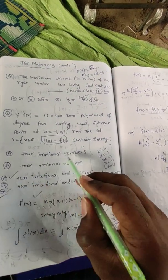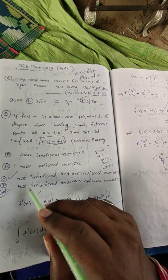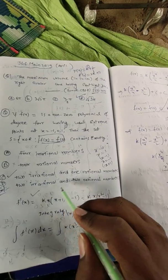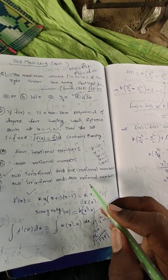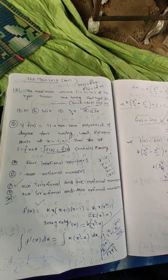4 irrational or 4 rational — those are wrong. 2 irrational and 2 rational — also wrong. So option C is correct. Thank you.